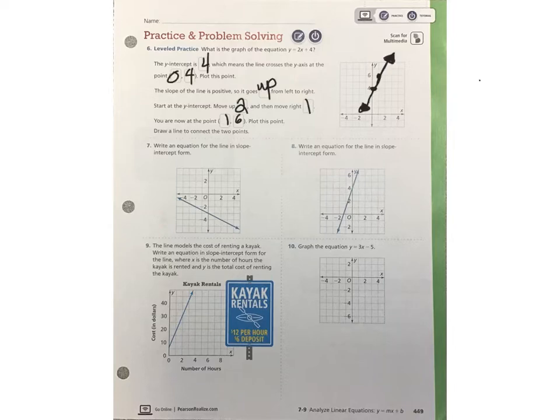Go ahead and check your answer to number 6. Remember, the y-intercept is 4, which means the line crosses the y-axis at the point 0, 4. So first of all, put that point on the graph. Next, you need to find the slope. The slope of this line is positive, so it goes up from left to right. Starting at the y-intercept, move up 2 and then move right 1. You are now at the point 1, 6, so plot that point. Now draw a line to connect the two points, and you have your line.